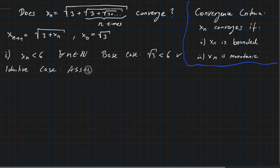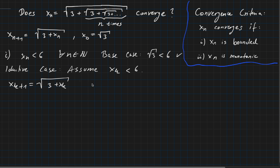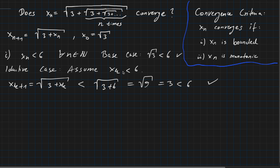For the inductive case, assume x_k is smaller than 6; we want to prove that x_{k+1} is also smaller than 6. We have x_{k+1} = √(3 + x_k) by our definition. Since x_k < 6 by assumption, we can estimate this as at most √(3 + 6) = √9, which equals 3.